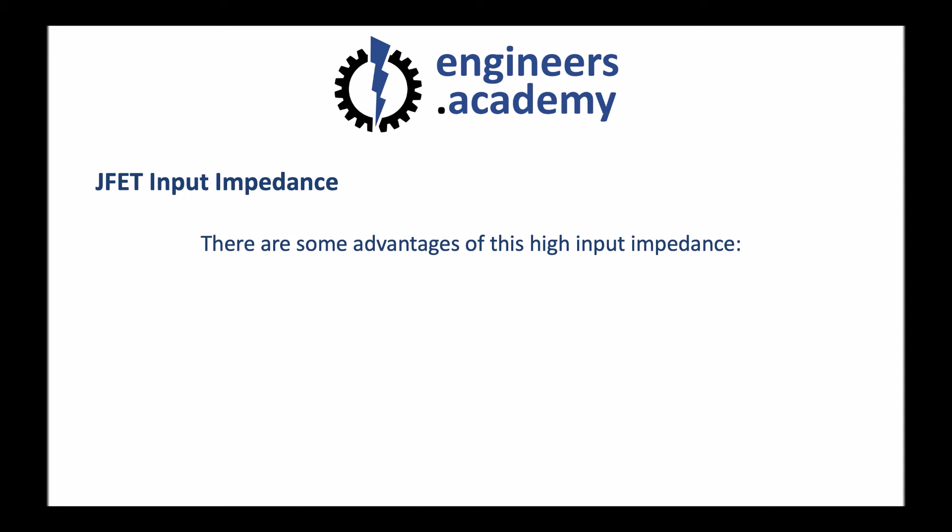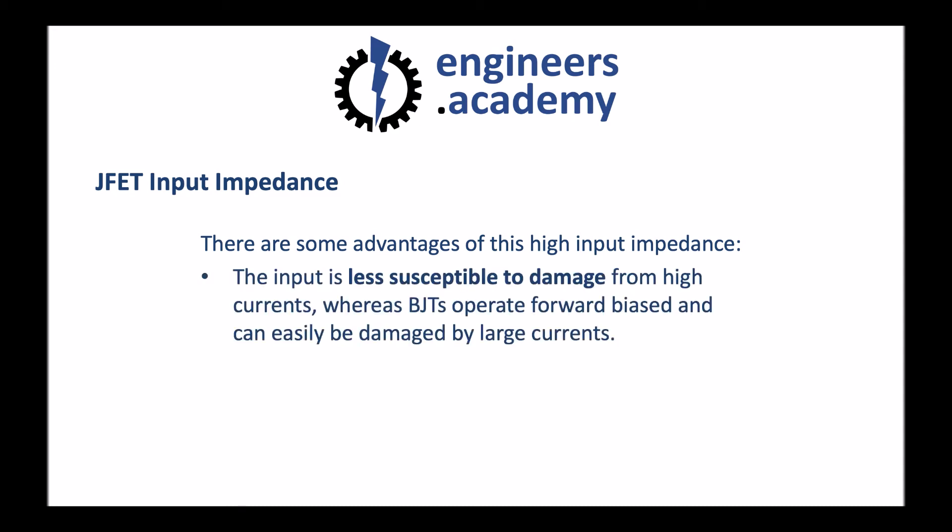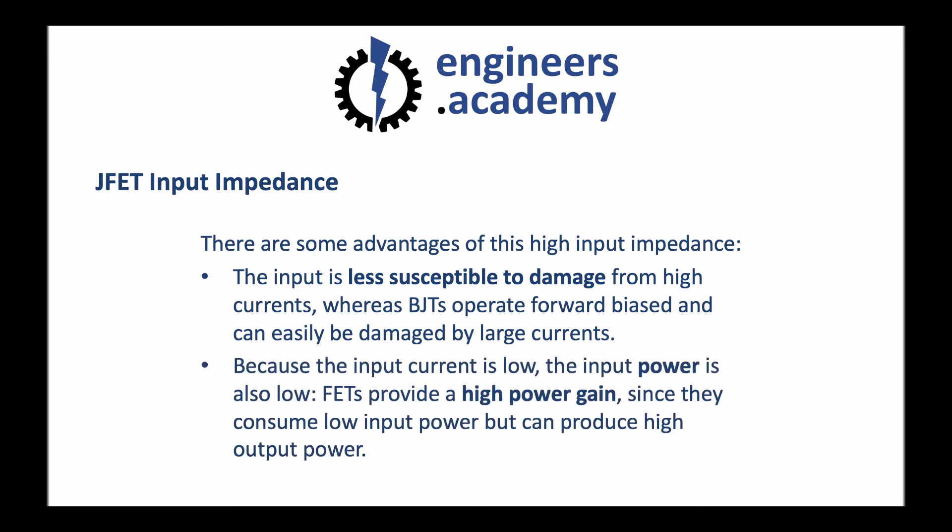There are some key advantages of this high input impedance. It makes the input less susceptible to damage from high currents. Remember that the bipolar junction transistor operates in a forward biased manner, and that means that very high currents could easily flow through the transistor and damage it. This isn't the case in J-FETs because of their reverse biased operation — very little current can flow through the gate. Because of the input current being so low, the input power is also low. FETs provide a high power gain, since they consume low input power but can still produce high output power.